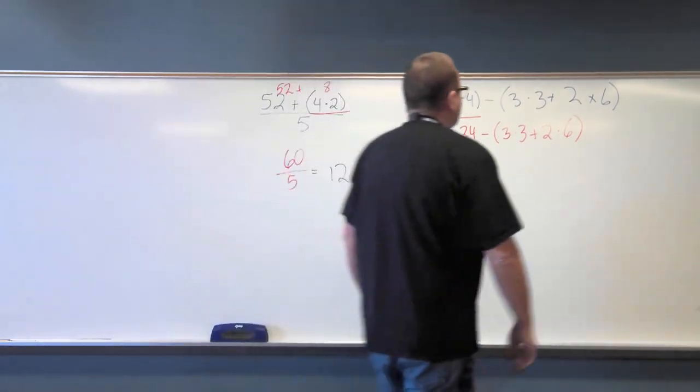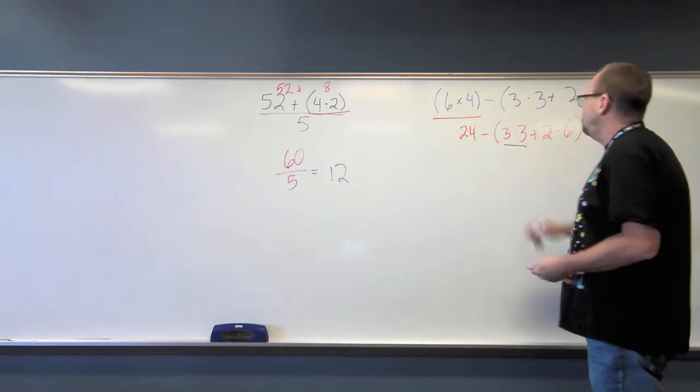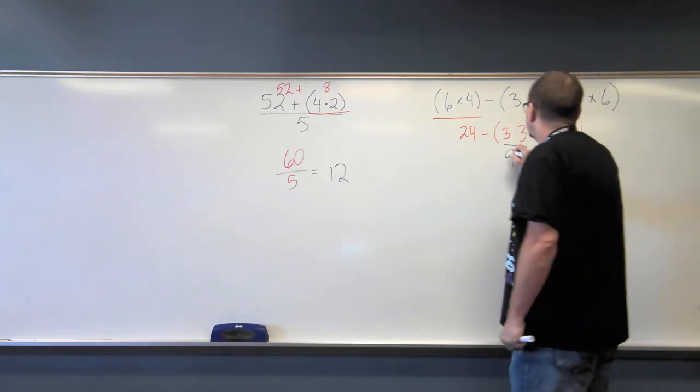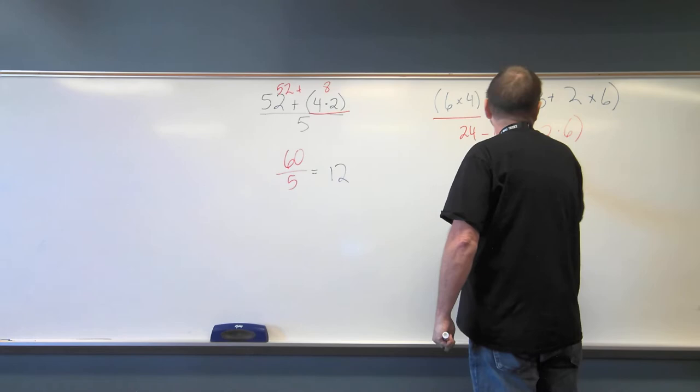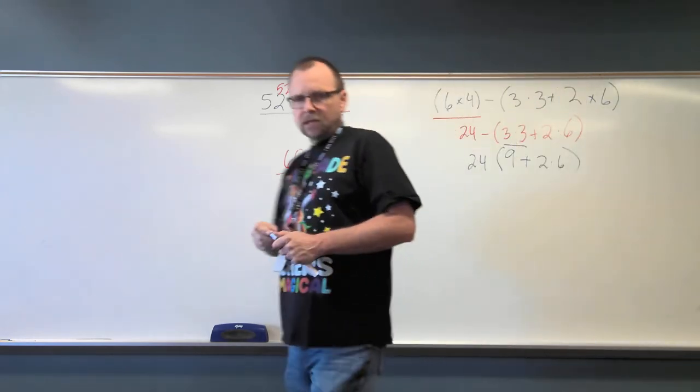Anthony, what do I do next? We do the other stuff. Good. I'm going to start left to right. So Anthony, what is three times three? Nine. Now this is still in the parentheses because we're not done.